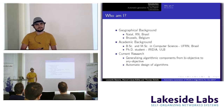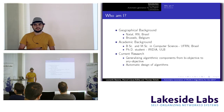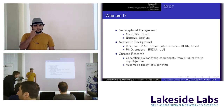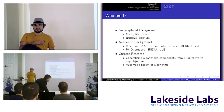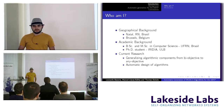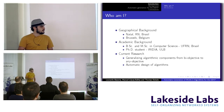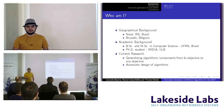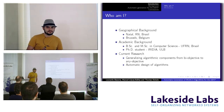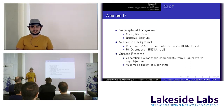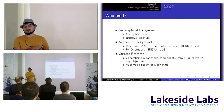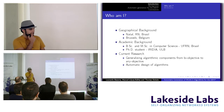Iridia is a lab which we consider to be quite large — about 35 people divided between optimization and robotics. I'm in optimization, and interestingly, about 50% of us are Italian, so it's kind of like an Italian lab inside Brussels.